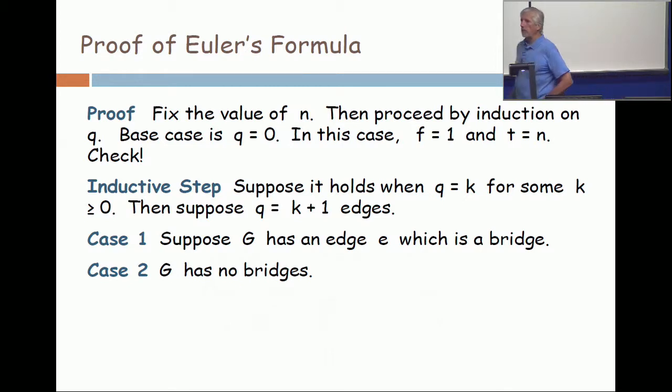So we're going to prove it for all q greater or equal to 0. If q equals 0, the base case, what is a graph on n vertices with no edges?